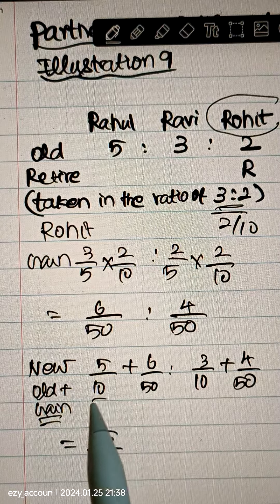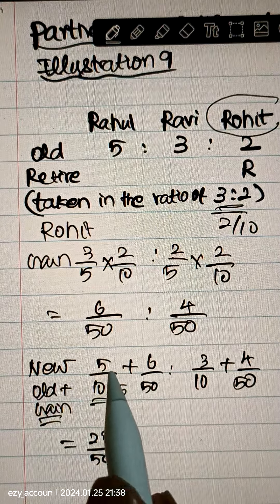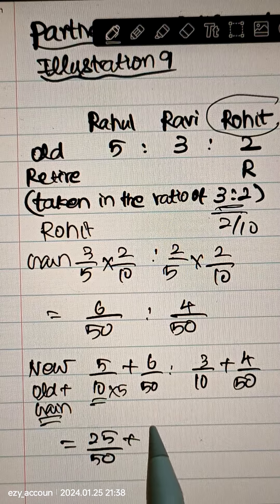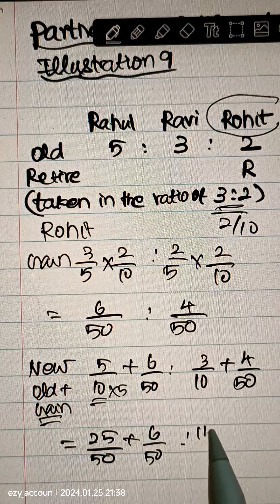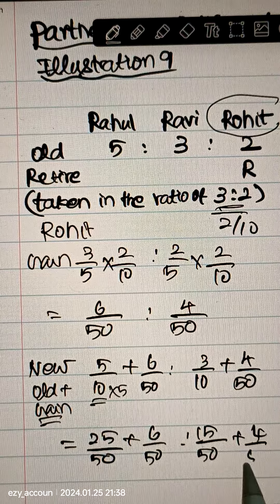5 by 10 is equal to 25 by 50. So 25 by 50 plus 6 by 50 is equal to 15 by 50 plus 4 by 50.